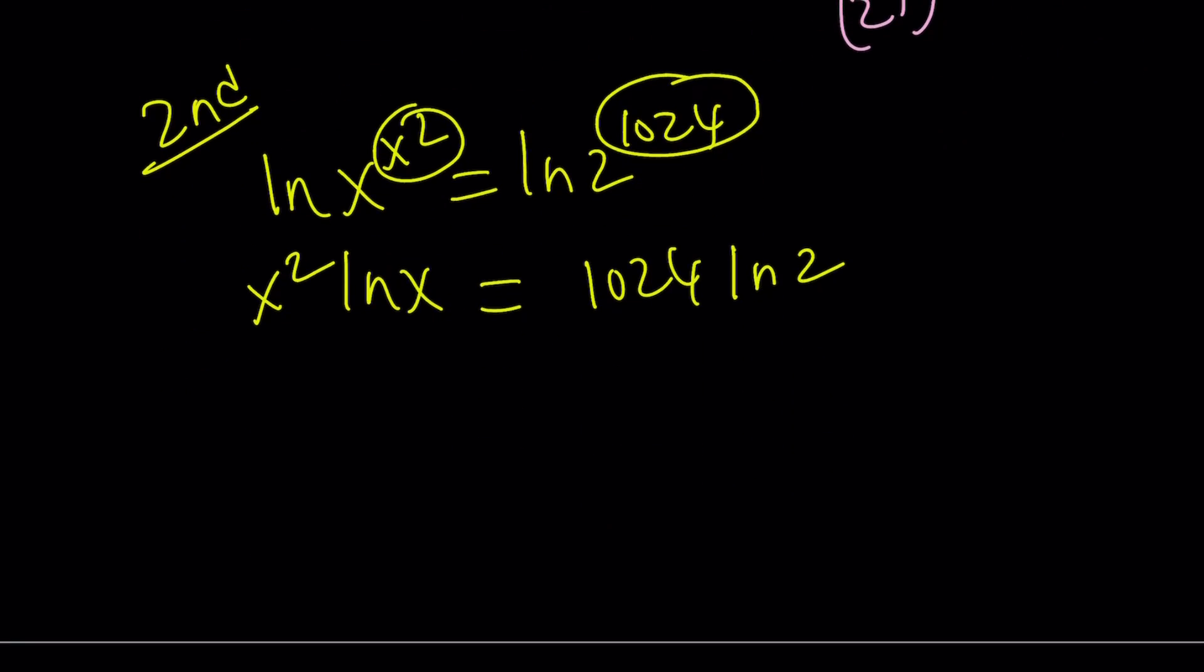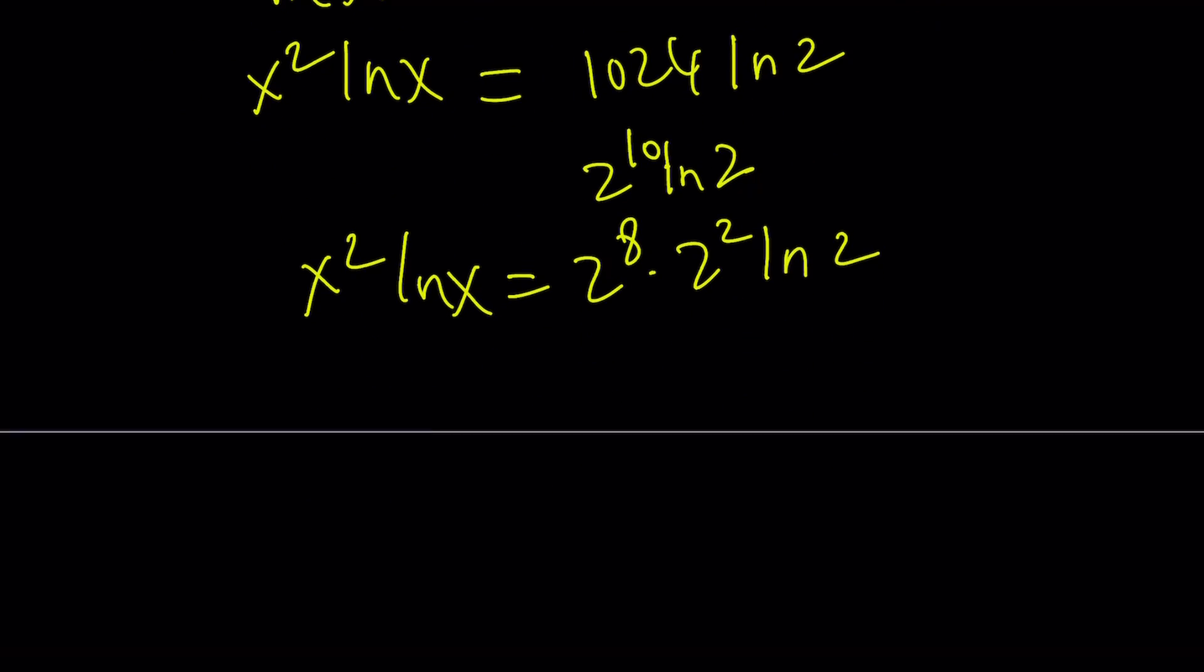So again, we need to manipulate this. 1024 can be factored like 2 to the 10th power times ln 2. And then we can break it down like 2 to the 8th times 2 to the 2nd times ln 2, and write it equal to x squared ln x. Here, we can move this to the front, but that's going to give us a very large number here and a smaller number here. So that's not a good idea. So we need to do the opposite and move this one instead, the smaller one.